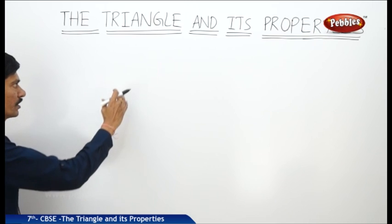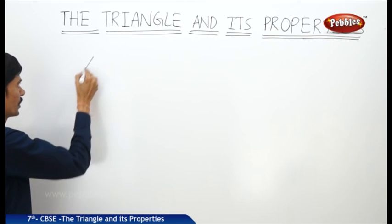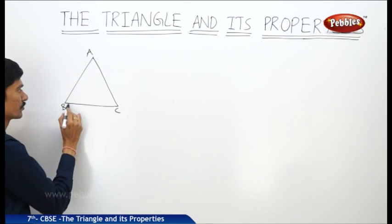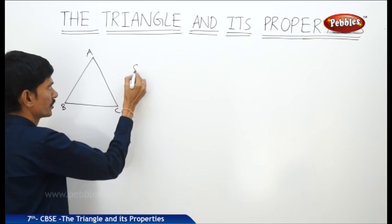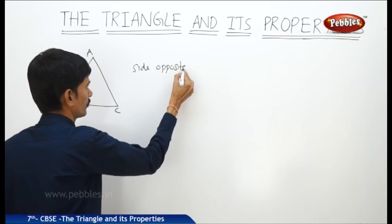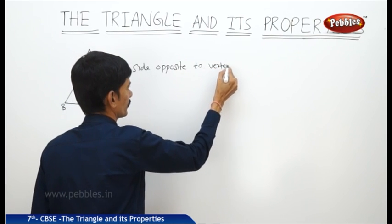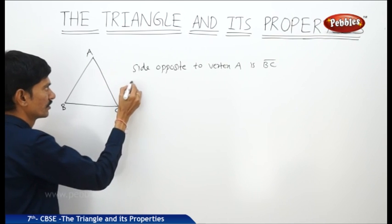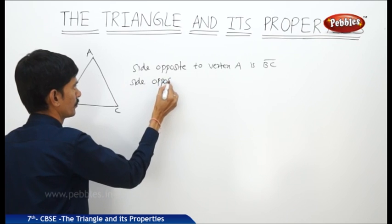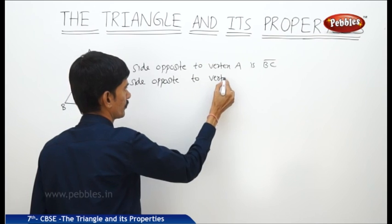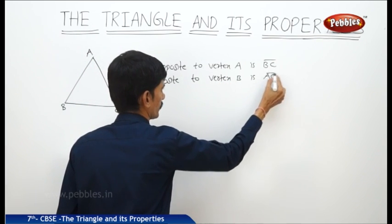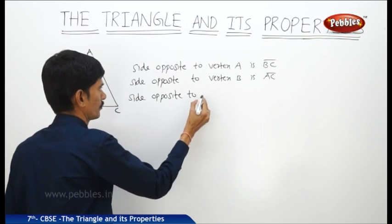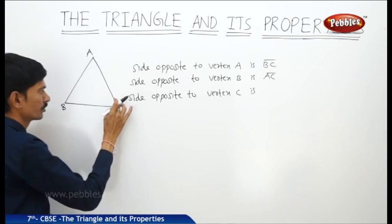Let us see the sides opposite to the vertices and the vertices opposite to the sides. In triangle ABC, the side opposite to vertex A is BC. The side opposite to vertex B is AC. The side opposite to vertex C is AB.